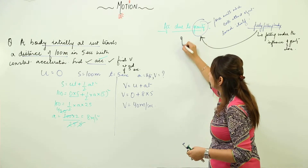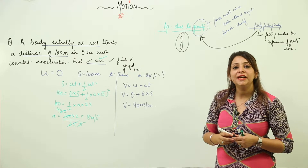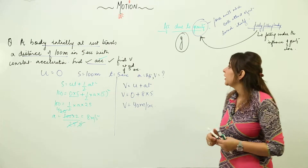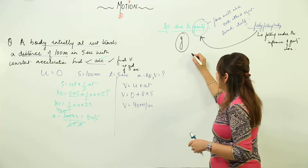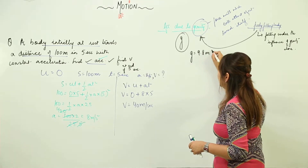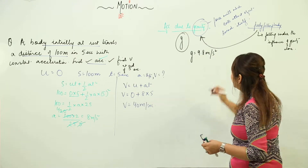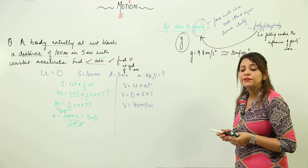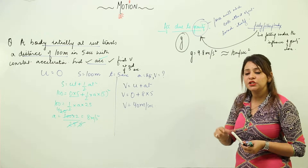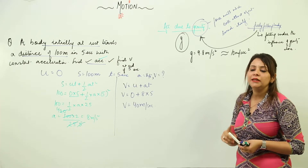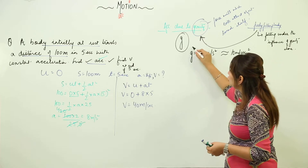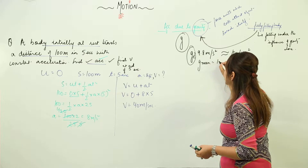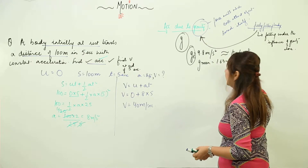Acceleration due to gravity is denoted by small g. This value is different on different planets or heavenly bodies. On Earth, it comes out to be 9.8 meters per second squared, which in numericals you can take as 10 meters per second squared. But if the question strictly says take g as 9.8, then do not take 10. On the Moon, the value is around 1.63 meters per second squared.